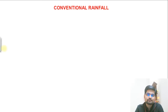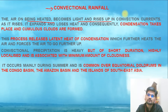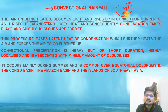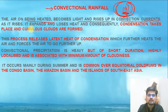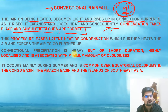Convectional rainfall: air on being heated becomes light and rises up. In the convectional process, hot air rises and cool air comes down, creating a convectional current. As the air rises, it expands and loses heat, causing condensation to take place and cumulus clouds to form. This is what produces convectional rainfall.